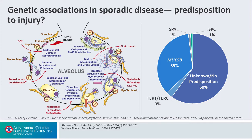So directed monoclonal activity at the immune activation, less directed activity involving nintedanib and pirfenidone at fibroblast recruitment and certainly at fibroblast activation. And then finally, directed monoclonal activity at the accumulation and cross-linking of the alveolar matrix.